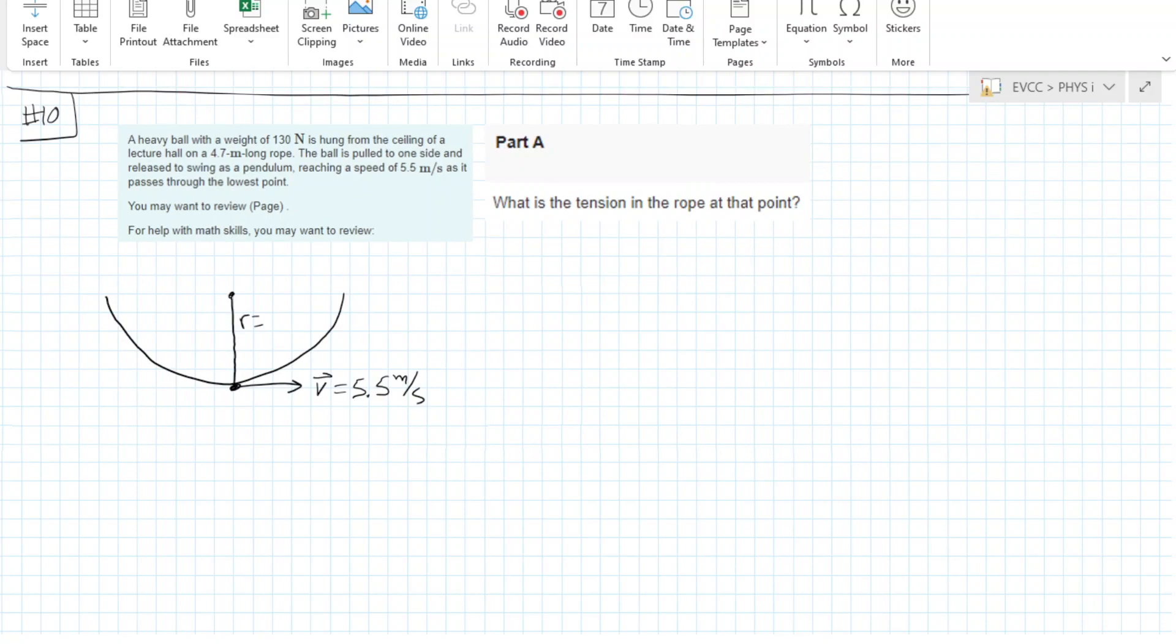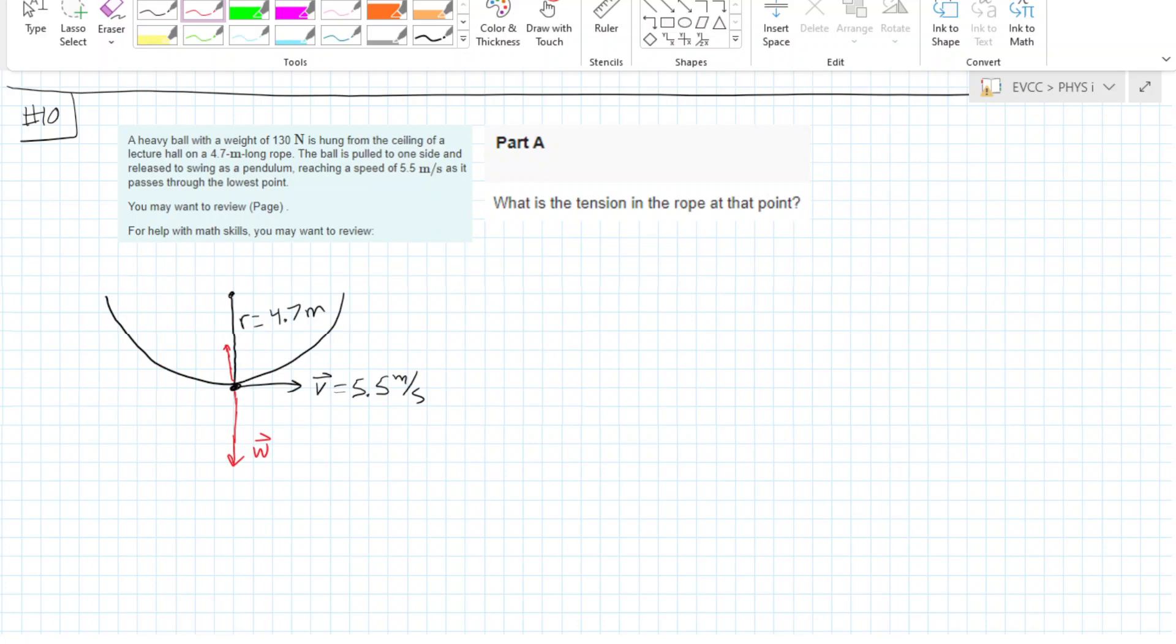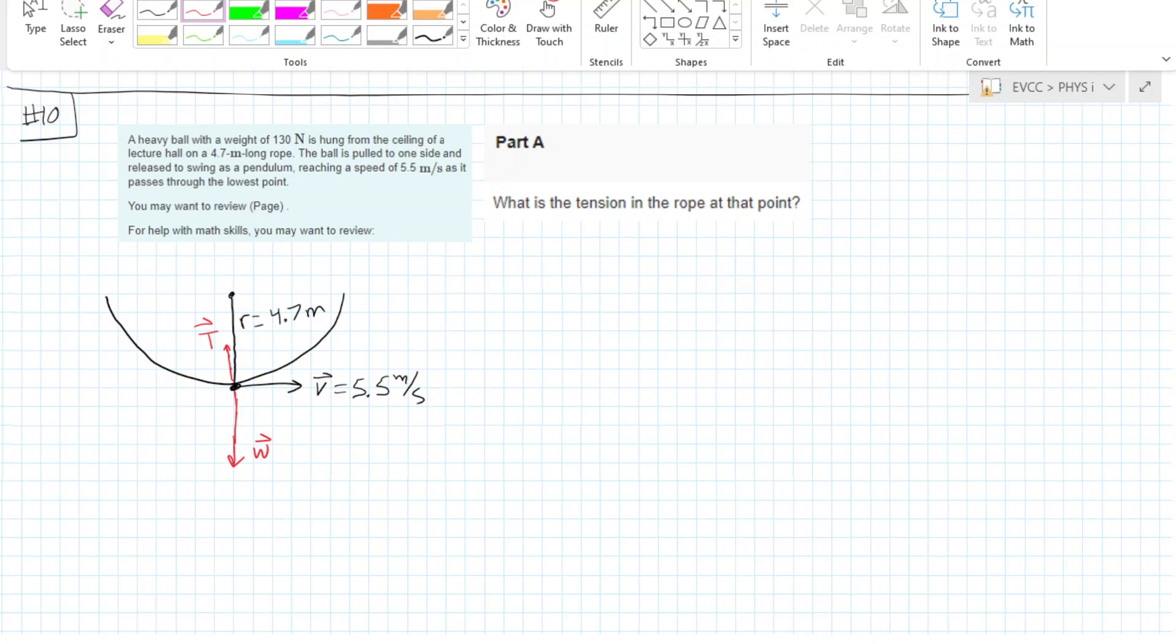Our rope is 4.7 meters long. The forces acting on this are the weight pointing down and tension pointing back up into the circle, forcing it to have circular motion.